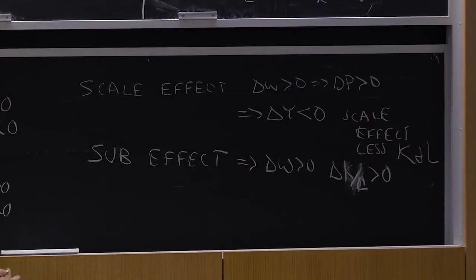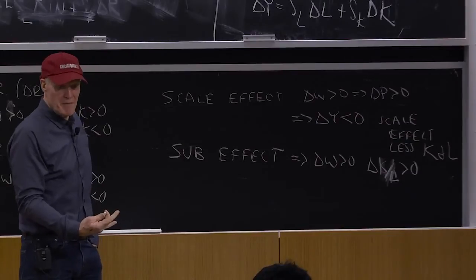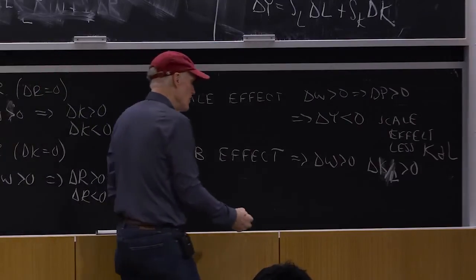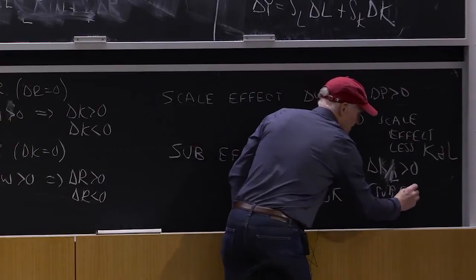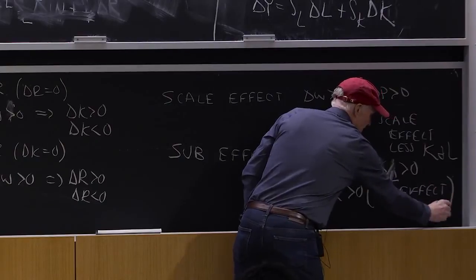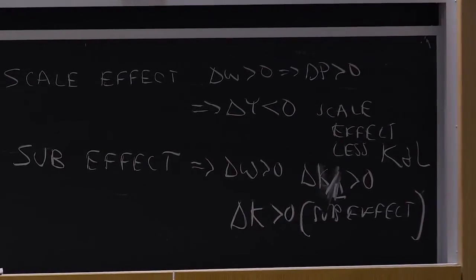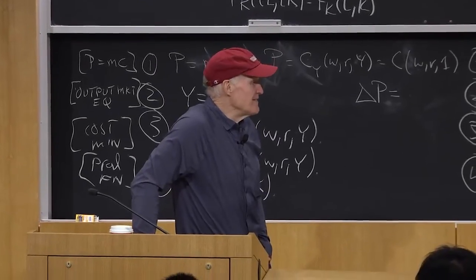If I'm holding output constant and I'm moving capital up relative to labor, which way must K be going? Well, K's got to be going up because you got to produce the same amount of output. If you use less labor, you got to use more capital. You can't produce the same output with less of both. So delta K is positive for the substitution effect. So yeah, it comes down to exactly that. That is, is the elasticity of demand more important than the elasticity of substitution? That's going to determine whether there are complements or substitutes.